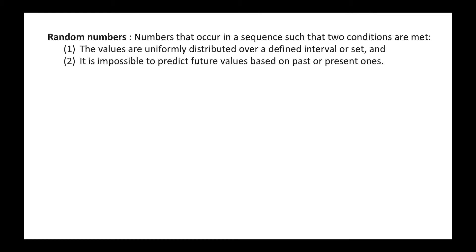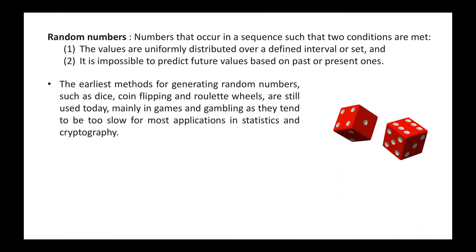As the name suggests, random numbers are random in nature — they don't have any relation with each other, that is their previous value or the upcoming value. Numbers occur in a sequence such that two conditions are met: first, values are uniformly distributed over a defined interval or set; second, it is impossible to predict future values based on past and present ones. In earliest times, generating random numbers was done by throwing a dice, flipping a coin, or using a roulette wheel.